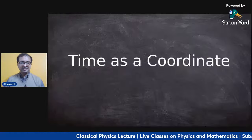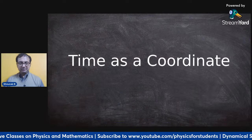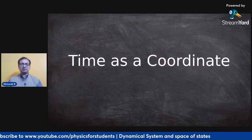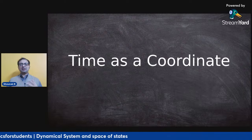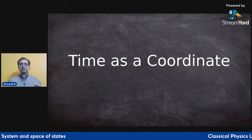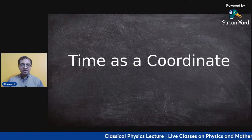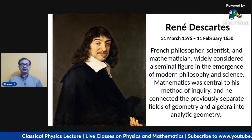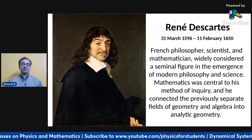From here, we move into time as a coordinate. When we study classical physics we are studying motion, and in order to study motion we need to keep track of time — we need to know how the motion is evolving. Let me tell you a little story about how the coordinate system was discovered.